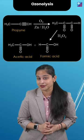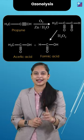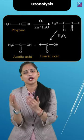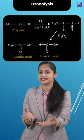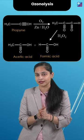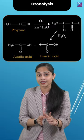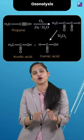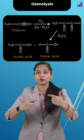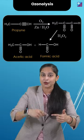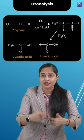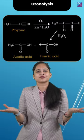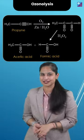Talking about the ozonolysis of alkynes — what will happen in alkynes? Alkynes undergo ozonolysis and give acid anhydride or diketone. If the reaction happens in the presence of water, then the diketone undergoes hydrolysis to give the corresponding acid. So this was the trick for ozonolysis. Hope you loved it.